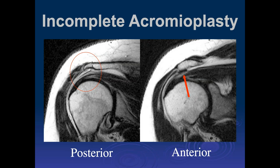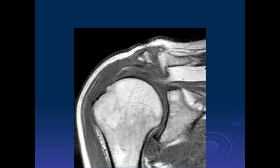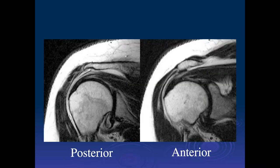The acromioplasty was done too far posteriorly. The area of impingement was the anterior margin, which was left untreated—an incomplete acromioplasty. The patient continued to have symptoms. The eburnation is anterior, so this was done in the wrong location and obviously didn't help the patient.